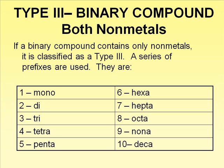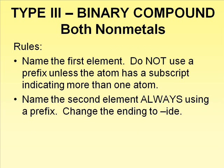Type 3 compounds use a series of prefixes in the compound's name. These prefixes are: mono for 1, di for 2, tri for 3, tetra for 4, penta for 5, hexa for 6, hepta for 7, octa for 8, nona for 9, and deca for 10. The guidelines for naming a Type 3 compound is to name the first element.